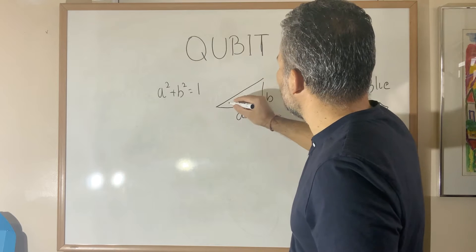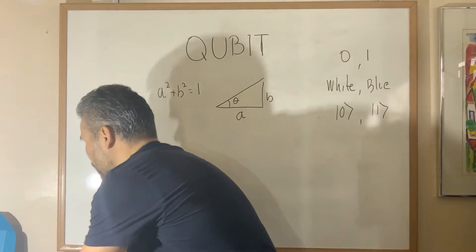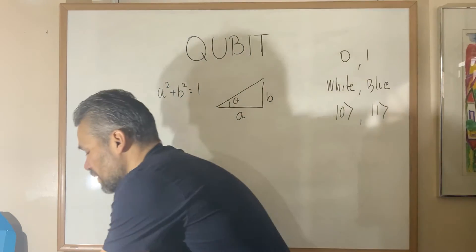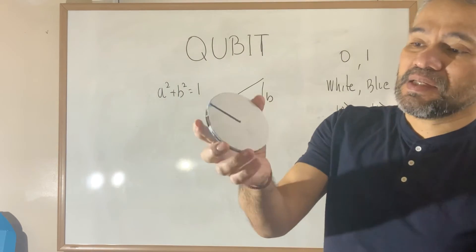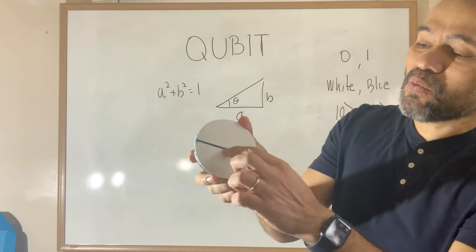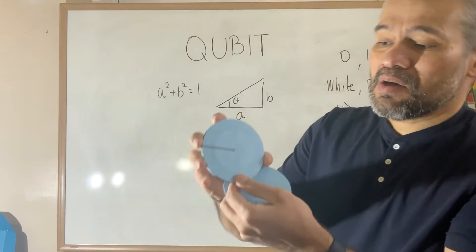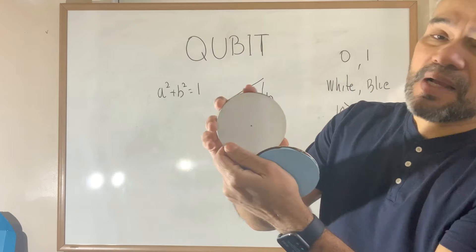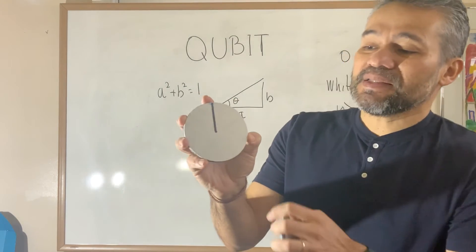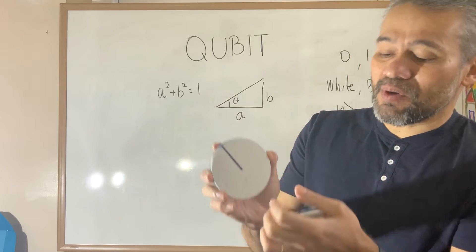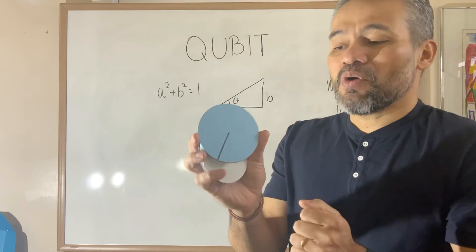We have a right triangle and here we have an angle theta. There are two exceptions that will not give us a triangle: when a is equal to one and b is equal to zero, and the other one is when b is equal to one and a is equal to zero. When this happens we say that the qubit is in position zero, and when that happens we say that the qubit is in position one.